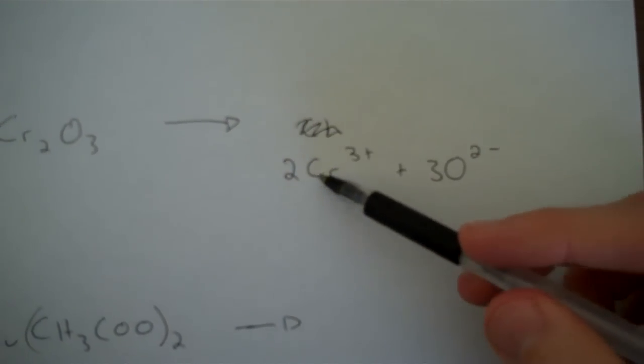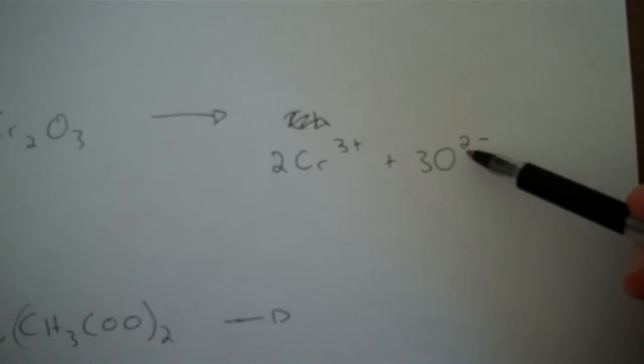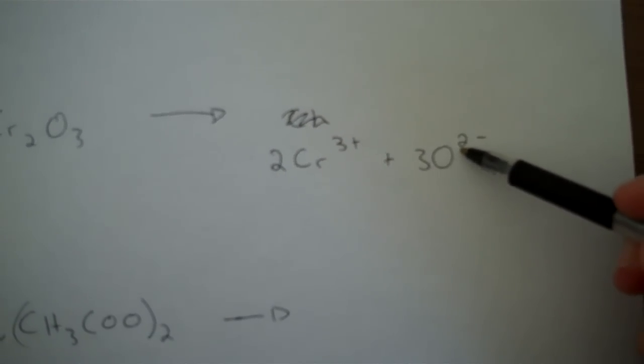So these are the ions. 2 chromium ions, each of which has a charge of 3+, and 3 oxide ions, each of which have a charge of 2-.